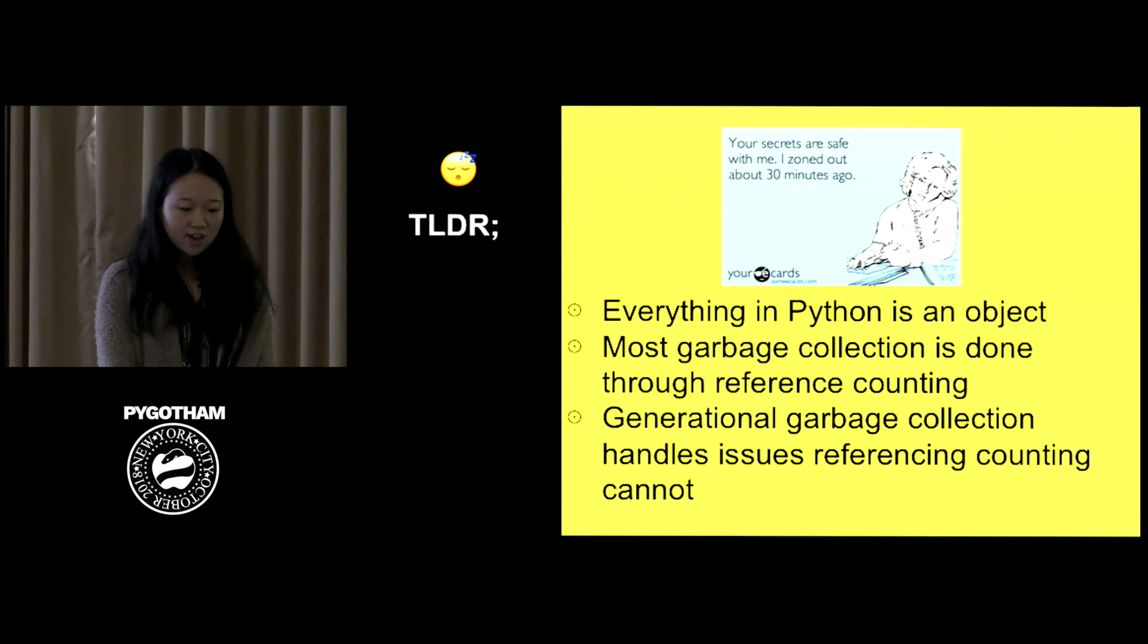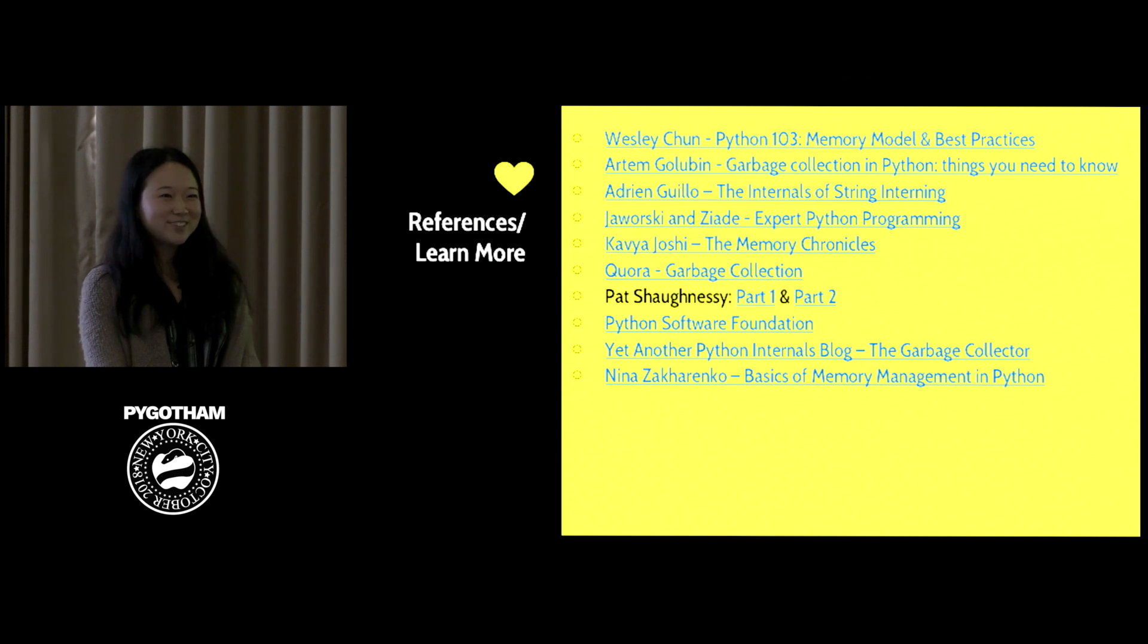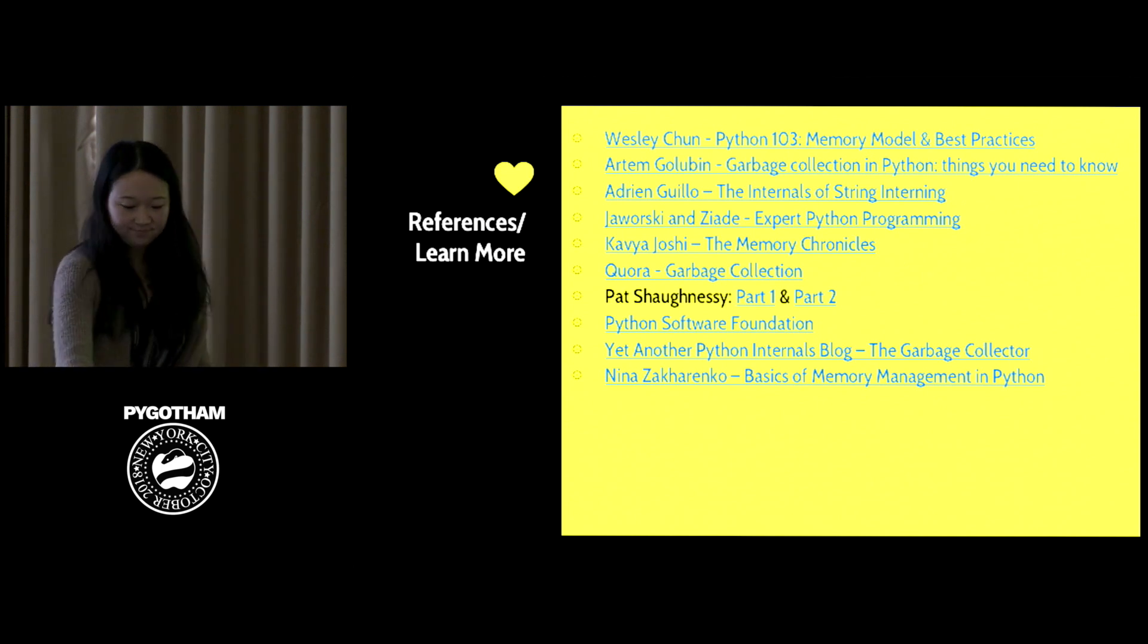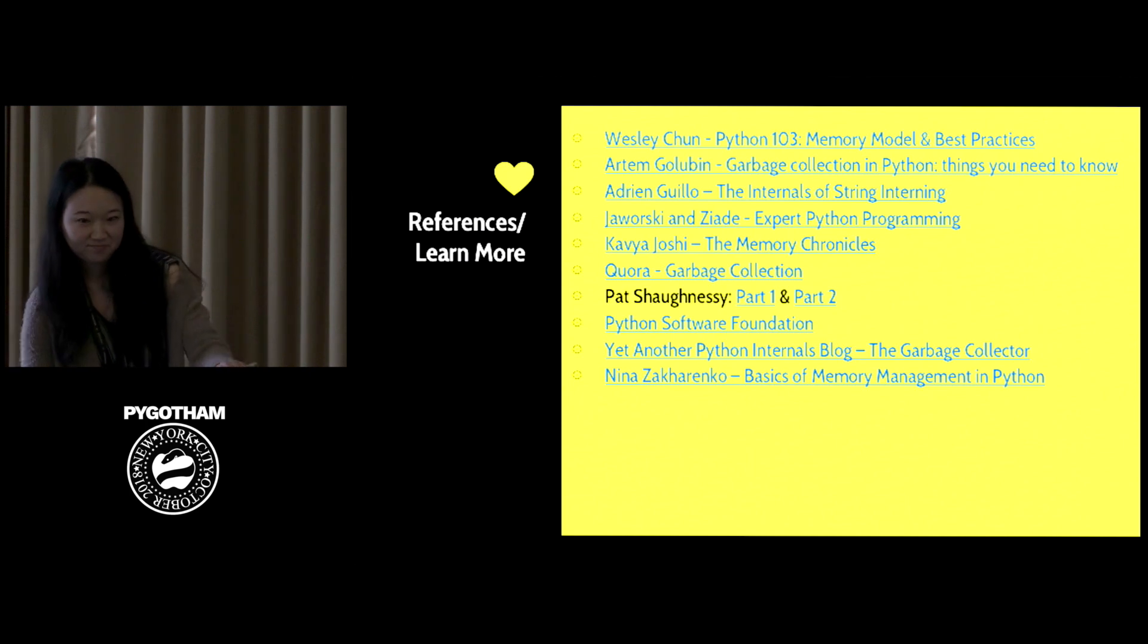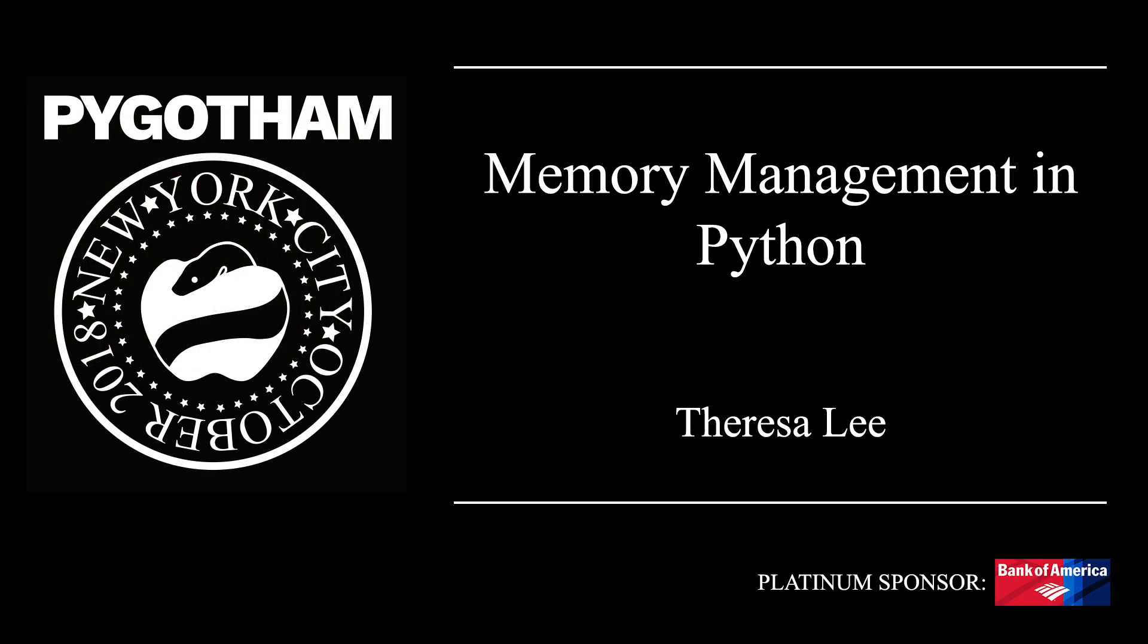So if you got anything from this program, it is one, everything in Python is an object. Two, most of the garbage collection in Python is done through reference counting. And three, anything that cannot be done by reference counting is handled by generational garbage collection. So thank you so much for listening to this talk. And thank you to my co-worker Hugo, who helped me a lot through this. And these are some references if you want to learn more. Thank you.